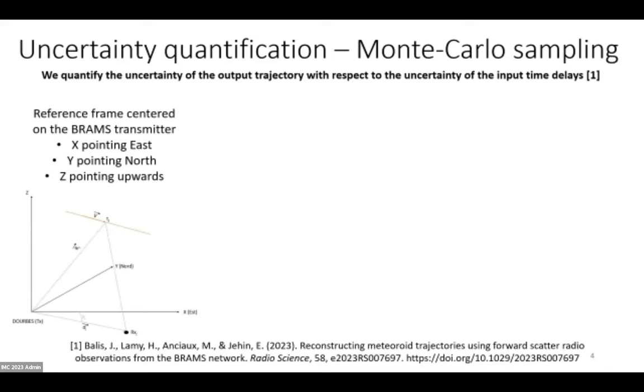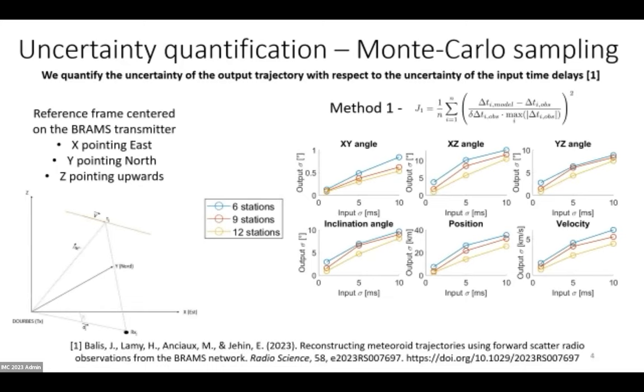With method one, when we use only the time delays as inputs, here are the results we obtain for the uncertainty quantification. What you see as the X-axis for all these subplots is the input uncertainty on the time delays, and what you see on the Y-axis are the output uncertainty on the trajectory parameters. For instance, if we look at the 3D inclination angle uncertainty, we see that already having five milliseconds of input uncertainty leads to more than five degrees uncertainty on the inclination angle, which is huge and obviously too much. Five milliseconds is actually something which is typically what we observe because of noise.